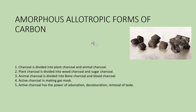Now, amorphous allotropic forms of carbon. Amorphous means granular. Charcoal can be divided into two divisions: plant charcoal and animal charcoal. Plant charcoal can be divided into two types: wood charcoal and sugar charcoal. Animal charcoal can be divided into two parts: bone charcoal and blood charcoal.